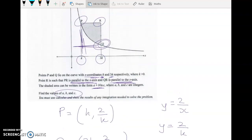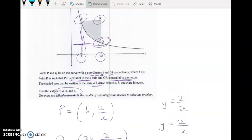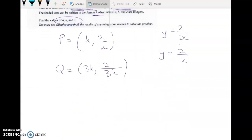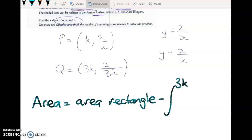And we don't even really need to find the coordinates of R, because all I've got to do now is figure out the width of the rectangle and the length of the rectangle. So let's just explain what we're going to do. The area is equal to area of rectangle minus this integral, the integral between 3k and k of the function. And that's a pretty easy achieved level 3 integration problem.